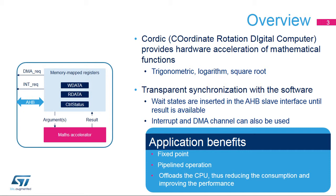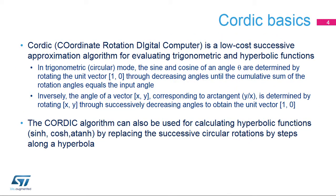Note that the Cordic block is a fixed-point arithmetic accelerator. Cordic, which means Coordinate Rotation Digital Computer, is a hardware-efficient iterative method which uses rotations to calculate a wide range of elementary functions. In trigonometric circular mode, the sine and cosine of an angle theta are determined by rotating the unit vector (1, 0) through decreasing angles until the cumulative sum of the rotation angles equals the input angle. The X and Y Cartesian components of the rotated vector then correspond respectively to the cosine and sine of theta.